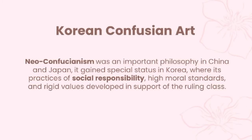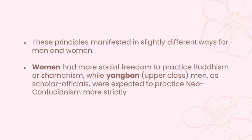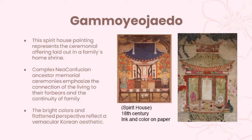Korean Confucian Art: Neo-Confucianism was an important philosophy in China and Japan. It gained special status in Korea, where its practices of social responsibility, high moral standards, and rigid values developed in support of the ruling class. The principles manifested in slightly different ways for men and women. Women had more social freedom to practice Buddhism or Shamanism, while Yang Bang, the upper-class men, as scholar officials, were expected to practice Neo-Confucianism more strictly. An example of their art during this time is called Gameohaito, which means Spirit House. The Spirit House painting represents the ceremonial offering laid out in a family's home shrine. Complex Neo-Confucian ancestor memorial ceremonies emphasize the connection of the living to their forbearers and the continuity of family. The bright colors and flattened perspective reflect a vernacular Korean aesthetic.